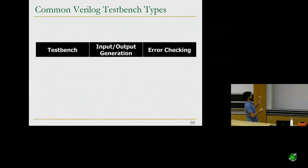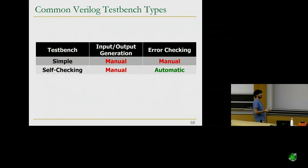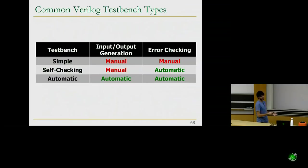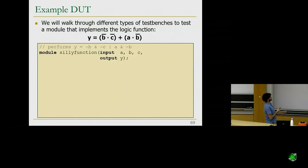There are three common test bench types. First, a simple test bench: inputs, outputs, and error checking are all manual. Second, a self-checking test bench: inputs are still manual but the test bench automatically checks correctness. Third, a fully automatic test bench: both input generation and error checking are automatic — preferred for large designs. We'll work through all three types with a Verilog module called 'silly function' that has three inputs A, B, C and one output Y implementing a particular logic function structurally using NOT, AND, and OR gates.